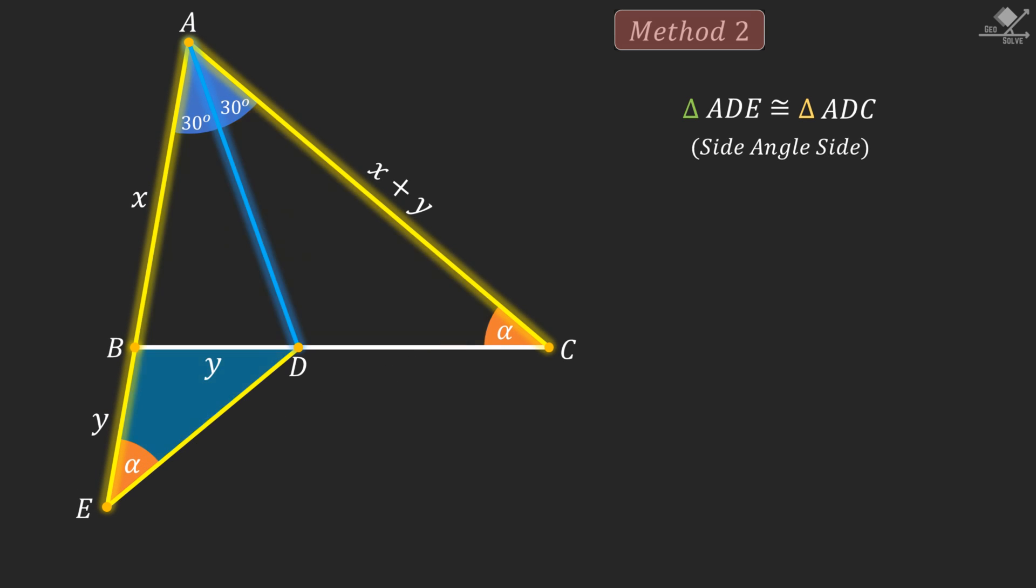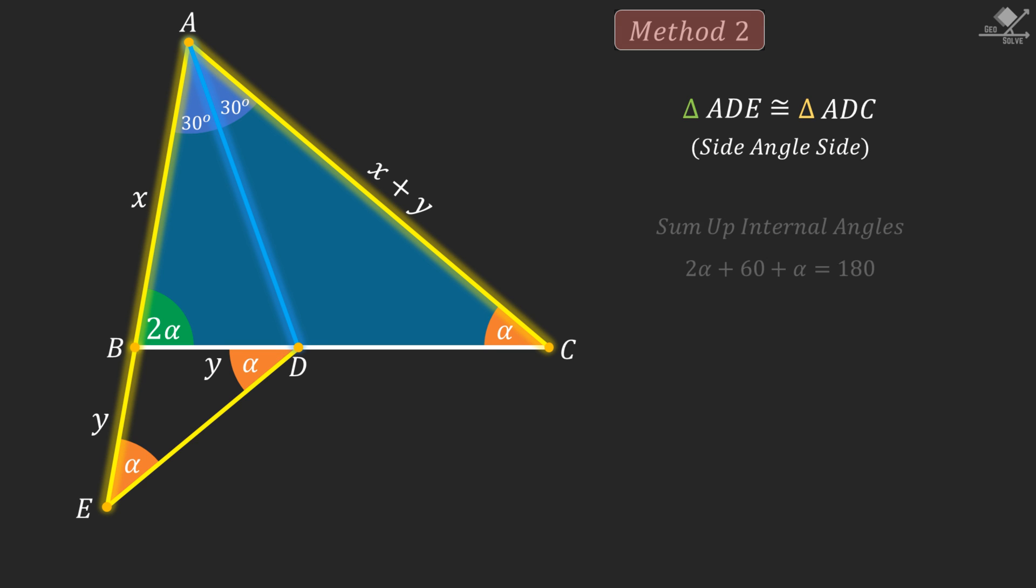Now focus on this isosceles triangle. Its base angles should be equal. And using exterior angle theorem, this angle can be found as 2 alpha degrees. Finally, let's focus on this triangle and sum up the internal angles.